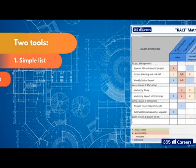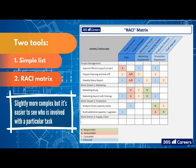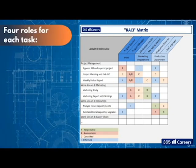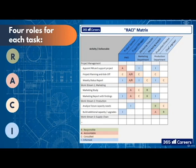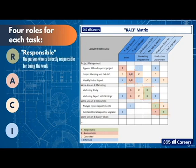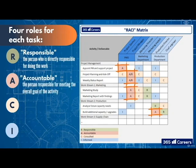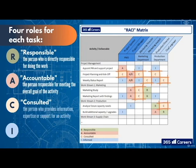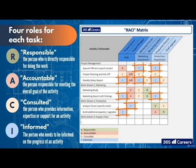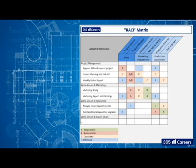The second tool is called an RACI matrix. It is slightly more complex, but it's easier to see who is involved with a particular task. According to the matrix, there are four roles for each task: R, A, C, and I. The first is Responsible — the person who is directly responsible for doing the work. Second is Accountable — the person responsible for meeting the overall goal of the activity, with the project manager being accountable for most things. Third, we have Consulted — the person who provides information, expertise, or support for an activity. The fourth is Informed — the person who needs to be informed on the progress of an activity, such as the project sponsor who must be kept up to date with the project health.